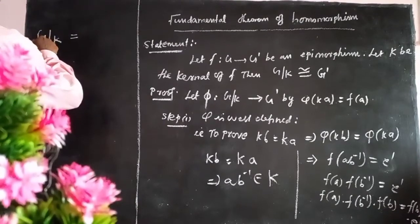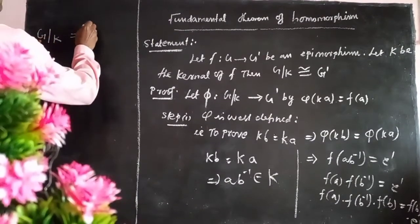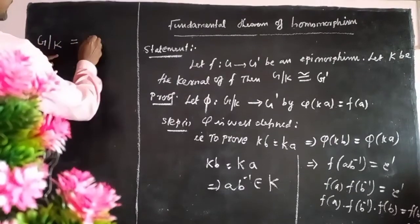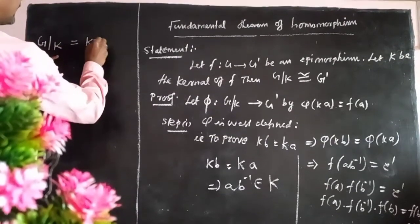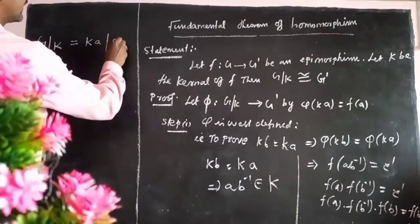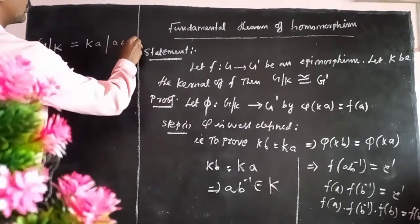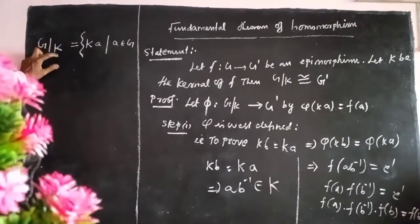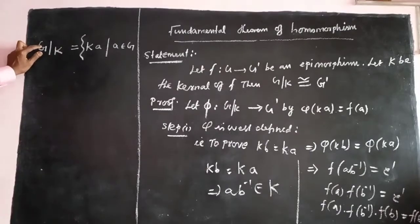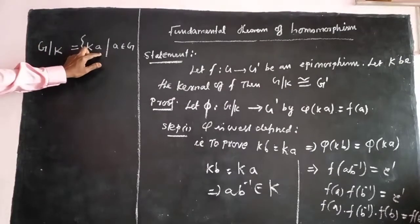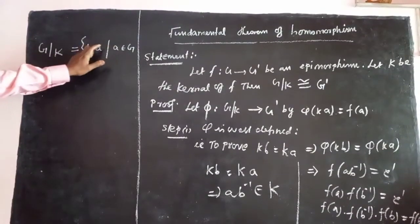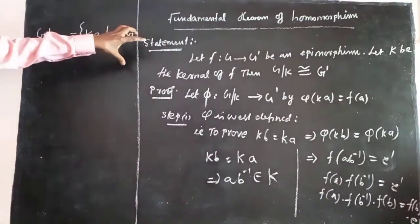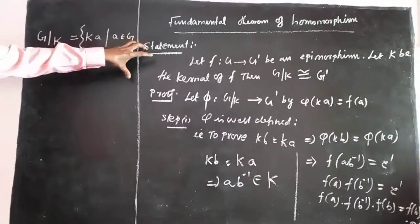So if we take one element in G, such that the element is A, just G divided by K — that is KA, such that A belongs to G. So all of the elements are like this: G divided by K.